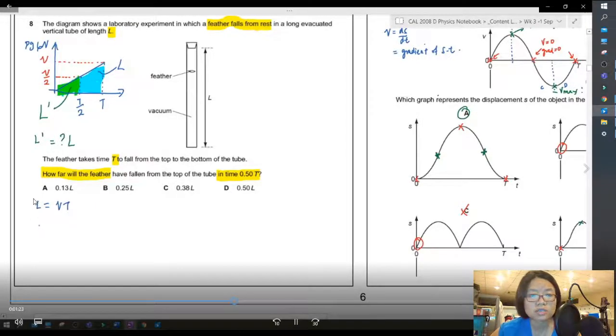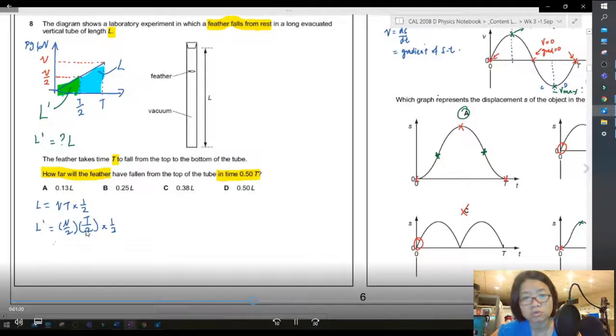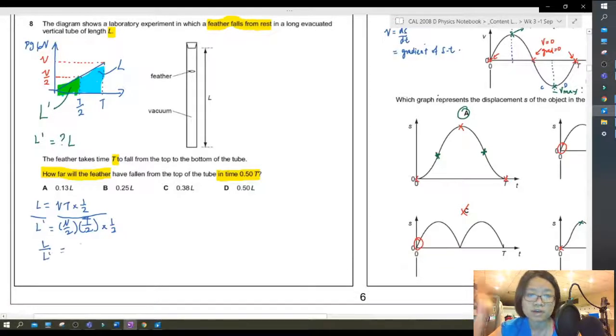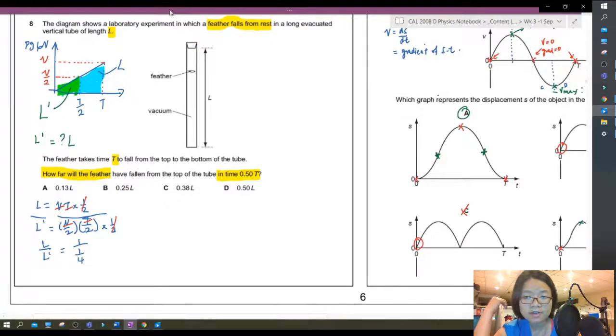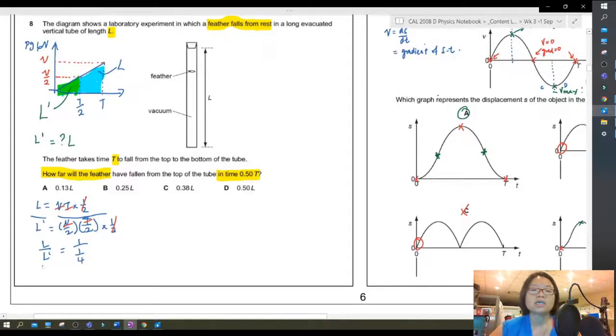So then I can just say L blue triangle is equal to vt times half and L prime will be v over 2, t over 2 times half. Of course the easiest way to get rid of vt is to divide. Alright, so if I divide them and simplify, I can cancel off my vt and also my half and what is left here is 1 over 4. After some rearranging, your L prime which is your new length is a quarter. Okay, which makes sense, right?